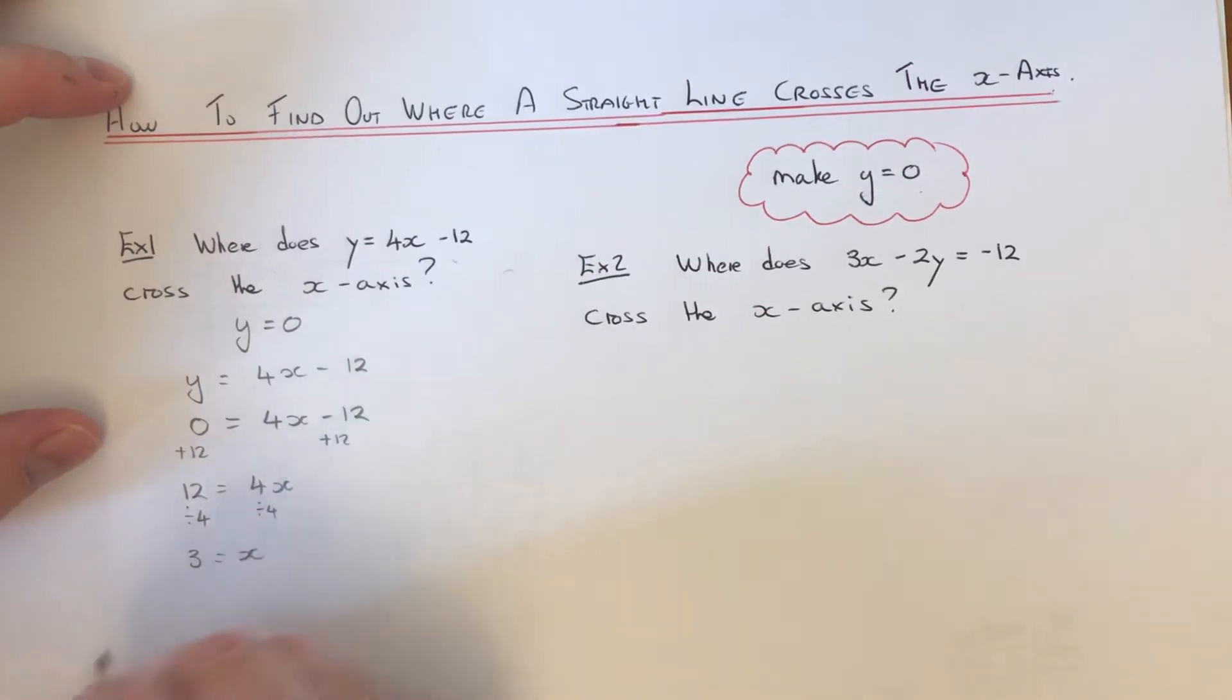The x-coordinate is 3, so our point where it crosses the x-axis would be 3, 0.